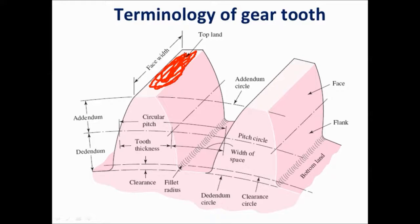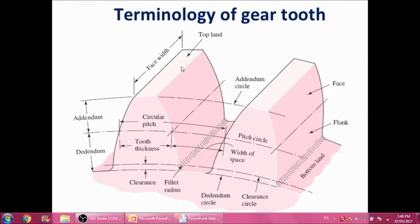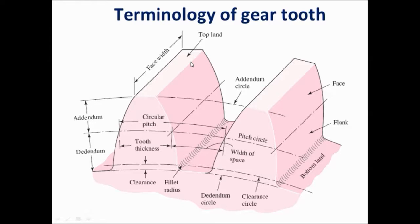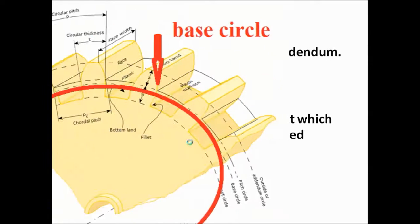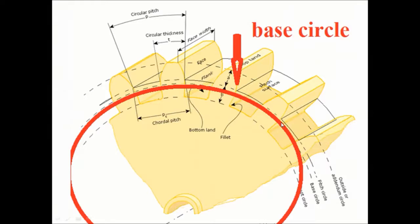Clearance is the addendum minus dedendum. Base circle — the base circle is an imaginary circle about which the tooth involute profile is developed. In this image you can watch this curve representing the base circle; its diameter is slightly less than the pitch circle diameter.